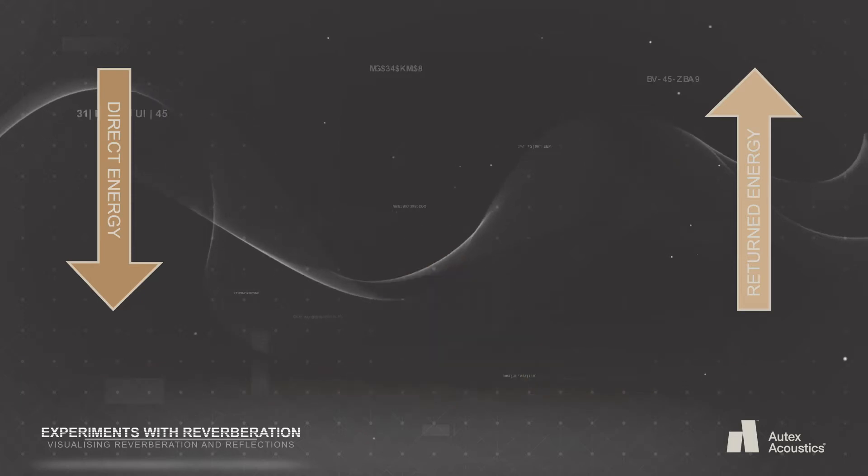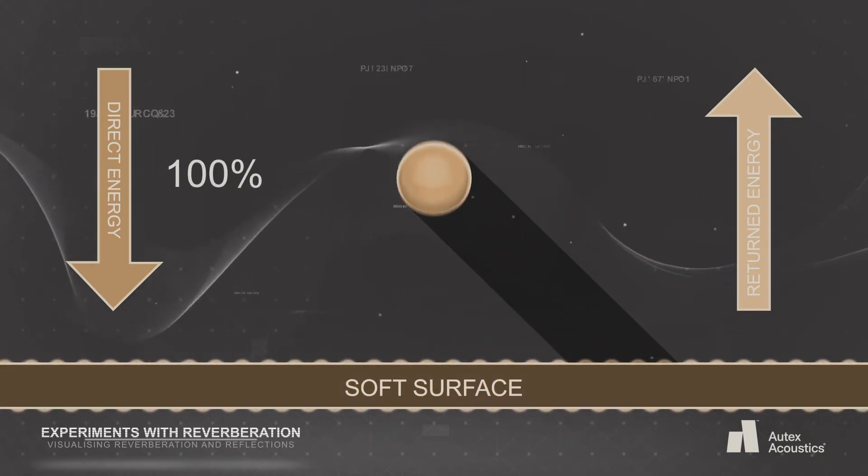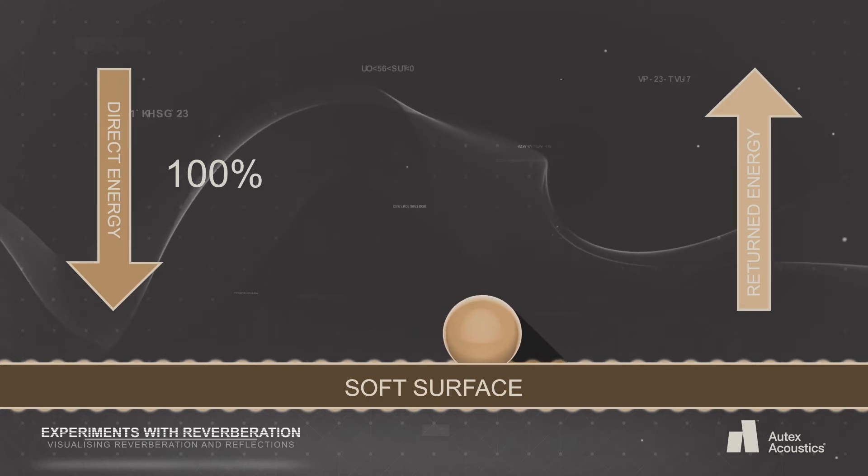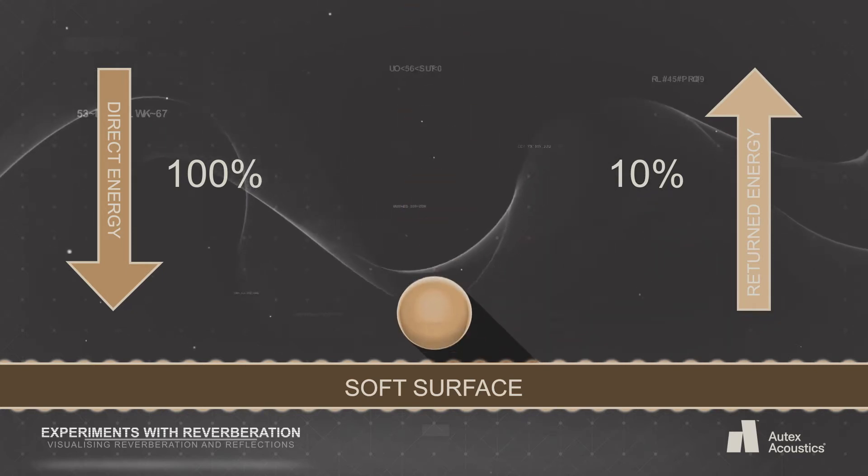Now the same ball is being dropped onto a softer surface. This surface is absorbing energy from the ball and dispersing that energy within itself. The ball bounces away with only a fraction of the energy it had before and comes to rest quickly.